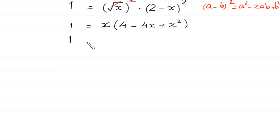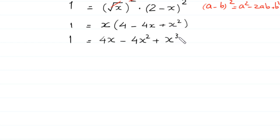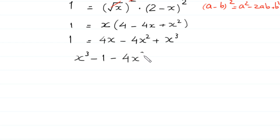Next, 1 equals — now we multiply x by 4, by negative 4x, and by x squared: x times 4 is 4x, x times negative 4x is negative 4x squared, and x times x squared is x cubed. Now we rearrange and move 1 to the right side: x cubed minus 4x squared plus 4x minus 1 equals 0.